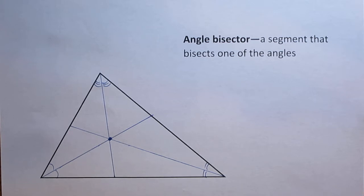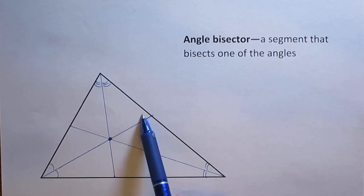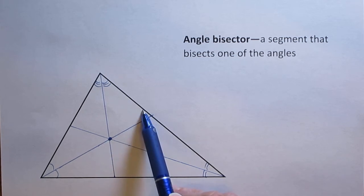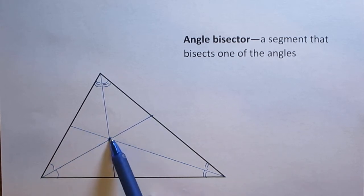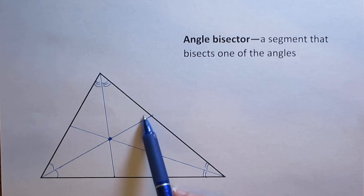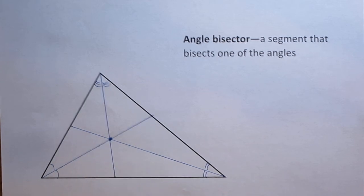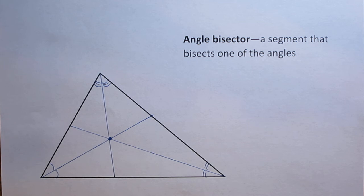And the in-center is always equidistant, same distance, from the sides of the triangle. Now, that's the perpendicular sides of the triangle. So you'd want to connect this point using a right angle to the opposite side and to this side and to this side as well. And all of those distances would be the same. The in-center will always be inside of a triangle.